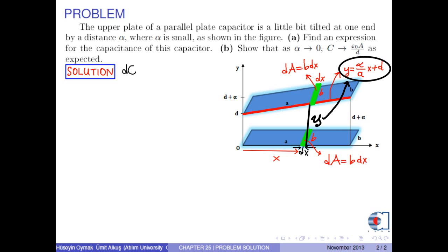As a result, we can find the infinitesimal capacitance with this formula: epsilon zero times dA over y. We know dA as b times dx and y as alpha over a times x plus d.